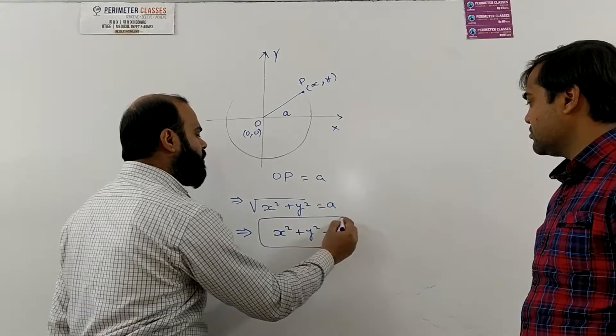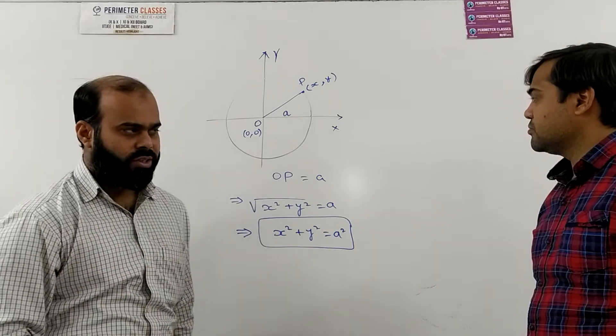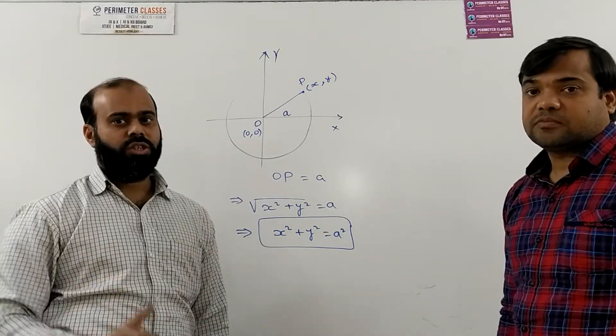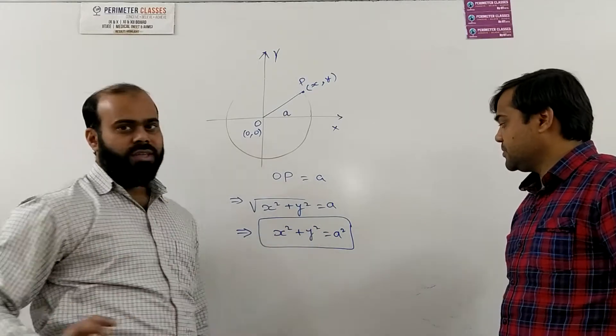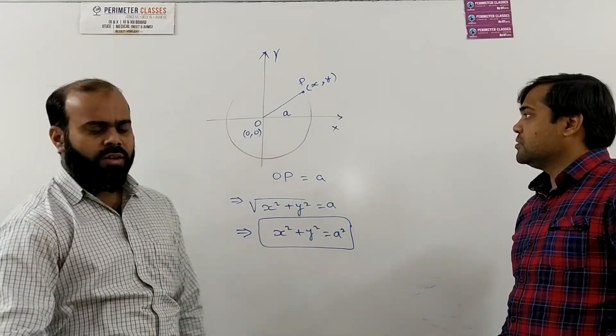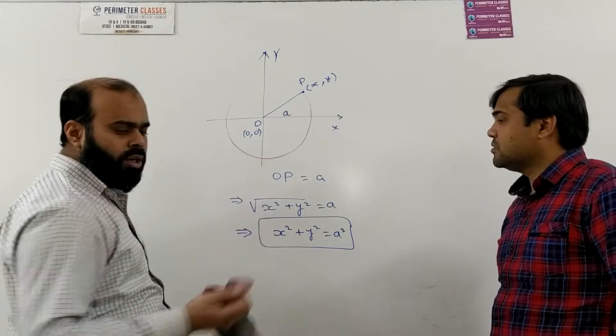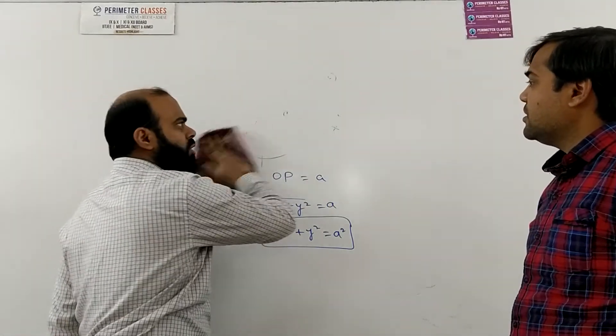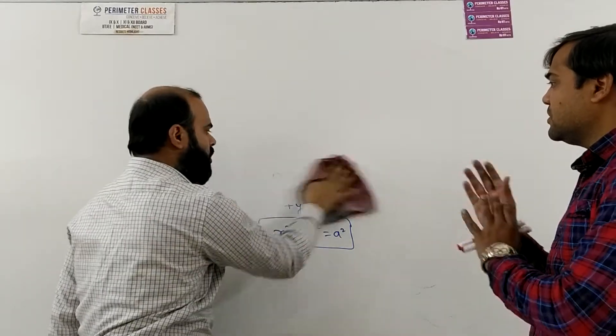So this is the simplest form of the equation of a circle and here the center of the circle is origin and the radius is a units. So now we may also need to find a circle when the origin is shifted to some other point also. A general equation of a circle and here what we are doing we are taking any point in any quadrant.